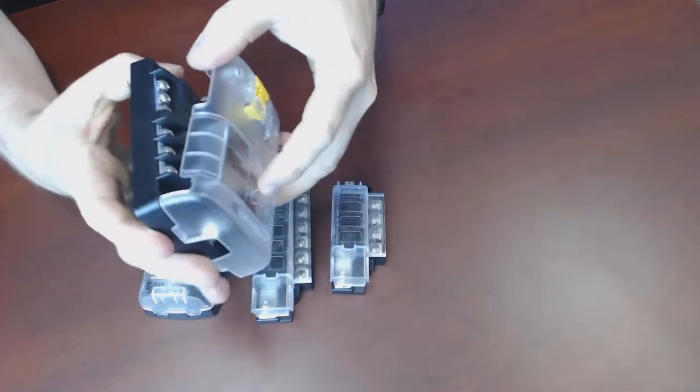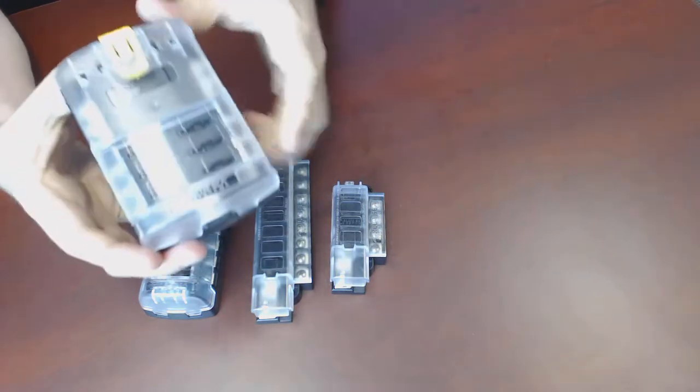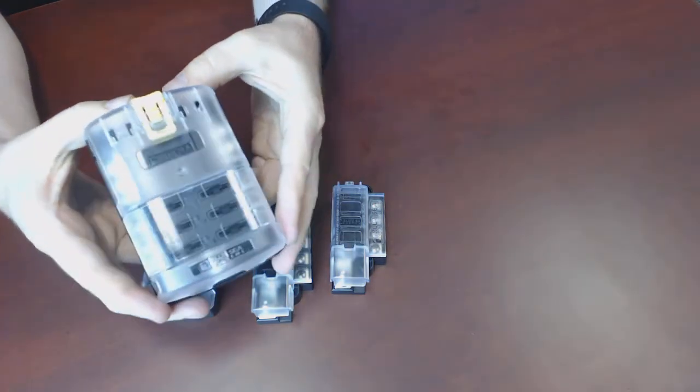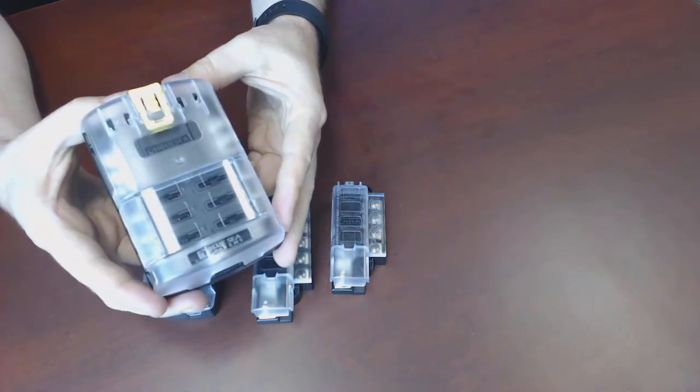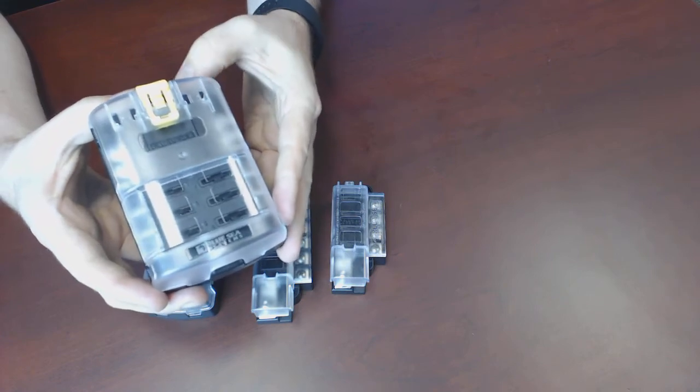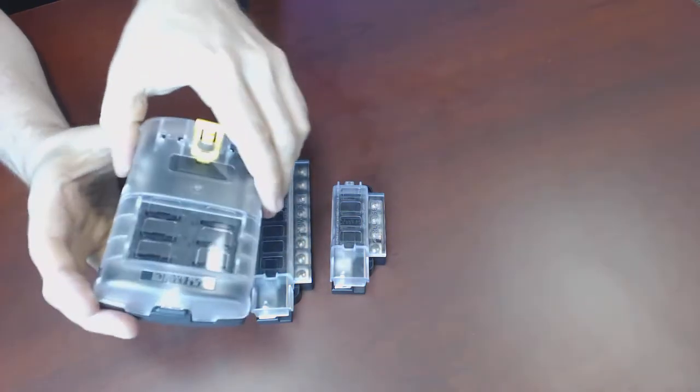You can use your own label maker or you can order custom labels and label packages from Blue Sea. So this is the model 5025. It's been around for quite a number of years and is very popular, one of our best-selling items.